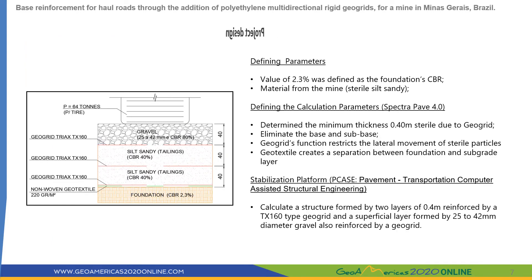This slide illustrates the project design. The picture represents the construction profile, which is formed by two silt sandy material layers covered by a gravel layer on top. All these layers have 40 cm thickness, and in between them we applied a layer of geogrid TX160. Only at the contact with the foundation was it necessary to apply a layer of geotextile. For this concept, we followed three steps, starting by defining the parameters: we used a CBR value of 2.3% for the foundation, and we also considered material from the mine, which is composed of sterile silt sandy material.